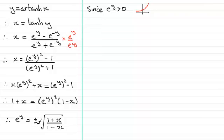So therefore, the negative option here is not going to be valid. Therefore, what we've got is that e to the power y must be equal to the positive root of 1 plus x times 1 minus x. So we've got e to the y then equals 1 plus x all divided by 1 minus x all to the power 1 half.